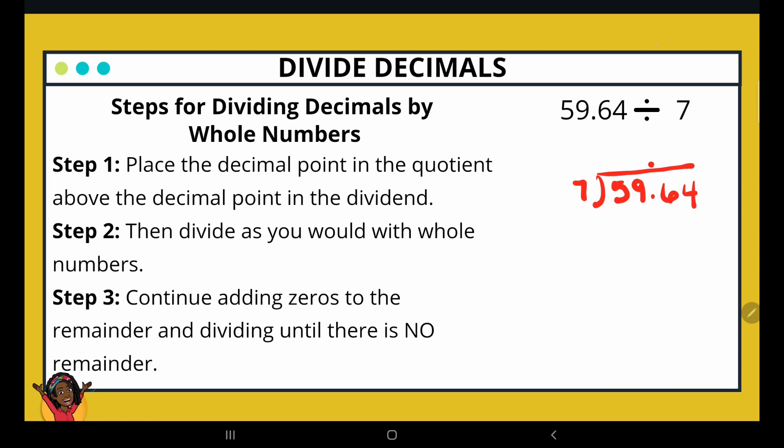Then I'm going to start dividing. Now 7 cannot go into 5. However, it can go into 59. 7 into 59 is 8 times. 8 times 7 is 56. And we subtract. That leaves us with 3. And then we bring down the 6. Now that decimal point is there. I'm not going to put any other digit in front of it. Only the 8. Everything else will go behind it. 7 into 36 is 5 times. 5 times 7 is 35. And then I bring down the 4. 7 into 14 is 2 times. 7 times 2 is 14. So what is the quotient of 59.64 divided by 7? It is 8.52.